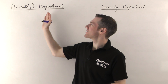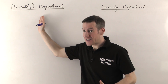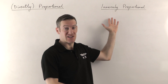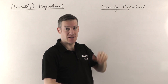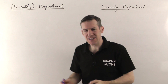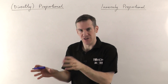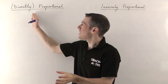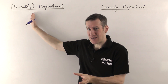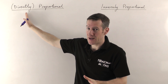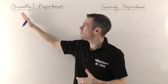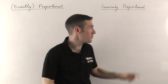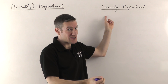There are two kinds of proportionality. You have things that could be directly proportional to each other or inversely proportional to each other. If you say that one thing is proportional to the other, that also means directly proportional — you don't need the 'directly' bit, but sometimes we use it to distinguish it from inversely proportional.